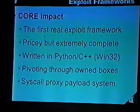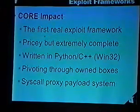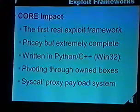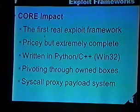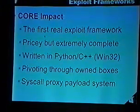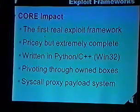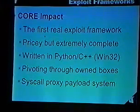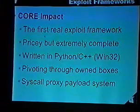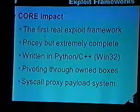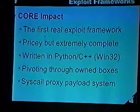A quick overview of Core Impact, written by Core Security Technologies — it was the first real exploit framework, around since about 2000, with really smart guys working on it. It's extremely complete and very well-developed, written in Python and C++. Their interface only runs on Windows but can exploit anything, with agents that run on pretty much all platforms. One of their main features is you can pivot through boxes you own at the perimeter, using a syscall proxying payload system for all their advanced file upload, download, and proxying. They've had this technology and really gotten good at it.